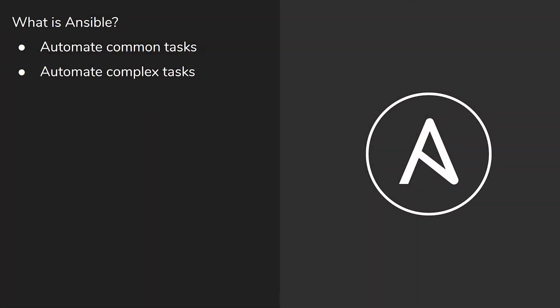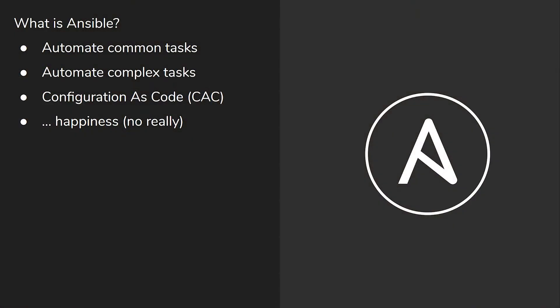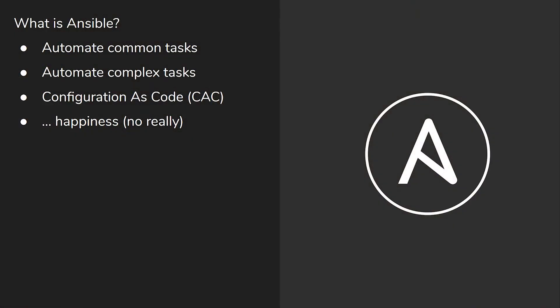Ansible can be used to automate very complex tasks. It also falls under the umbrella of configuration as code. Because we write our Ansible in YAML, it's effectively code, which means that code can be put into Git and version controlled — which is a very powerful concept indeed.